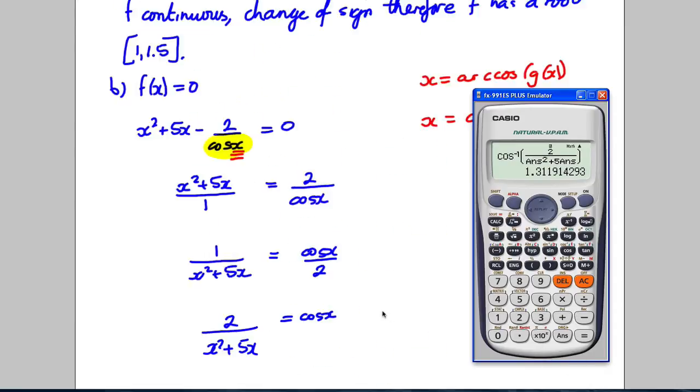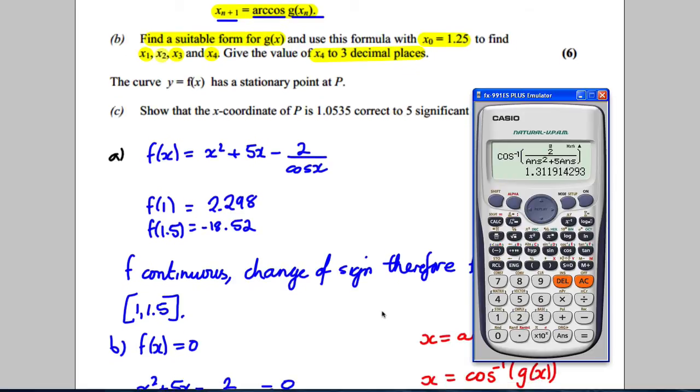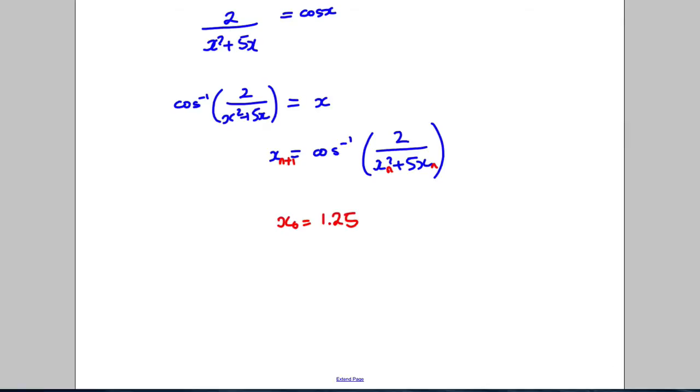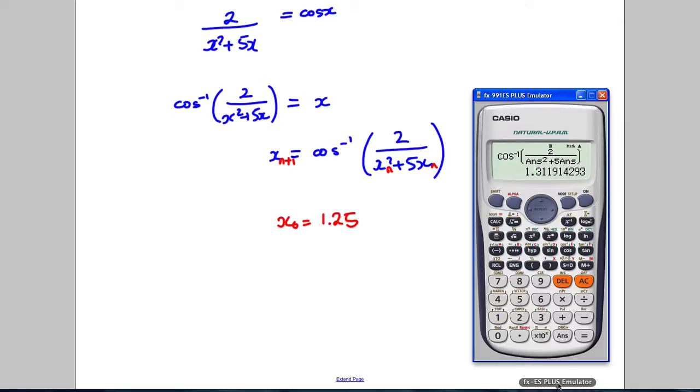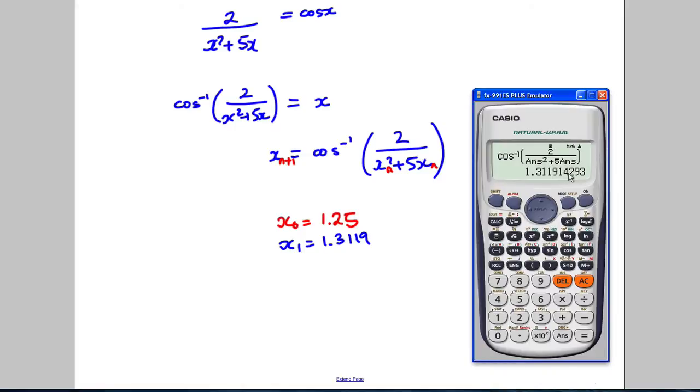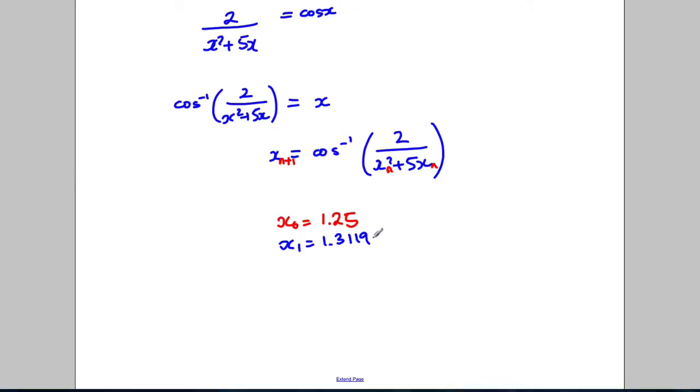So what do they want? Let's just check the decimal places. They wanted it to 3 decimal places x4. So I'm going to write everything out for each one up to that. So we have the x1 is 1.3119. So x1 equals 1.31429. 1 4 2 9 3.